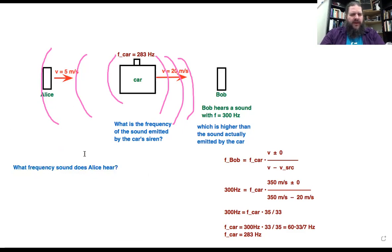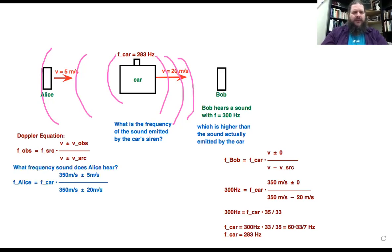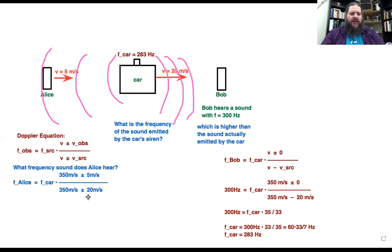Using the same Doppler equation, but now Alice is the observer and the car is still the source. Speed of sound is still 350, and the car is still moving at 20 meters per second. Since the car is moving away, now you would use plus in the denominator for V-source — because the car moving away suggests a smaller frequency, so we want a larger denominator to make a smaller result.